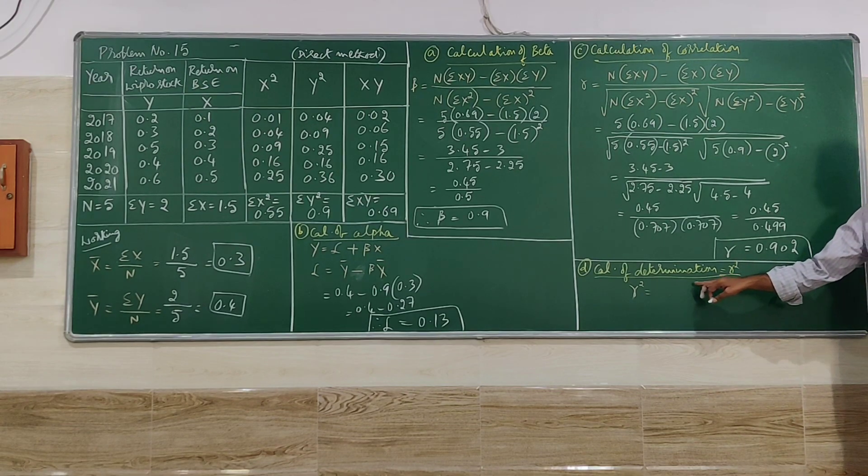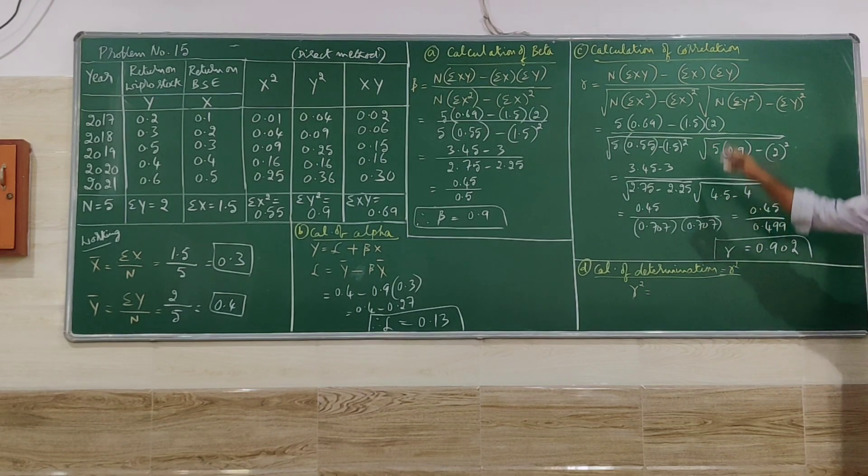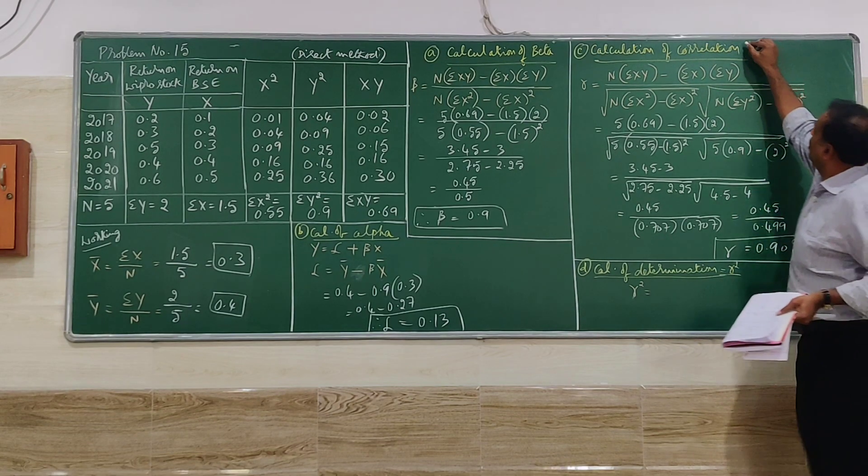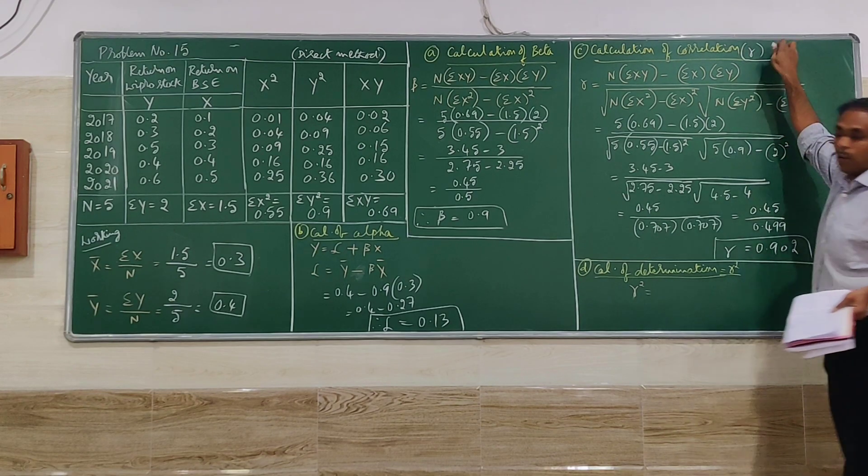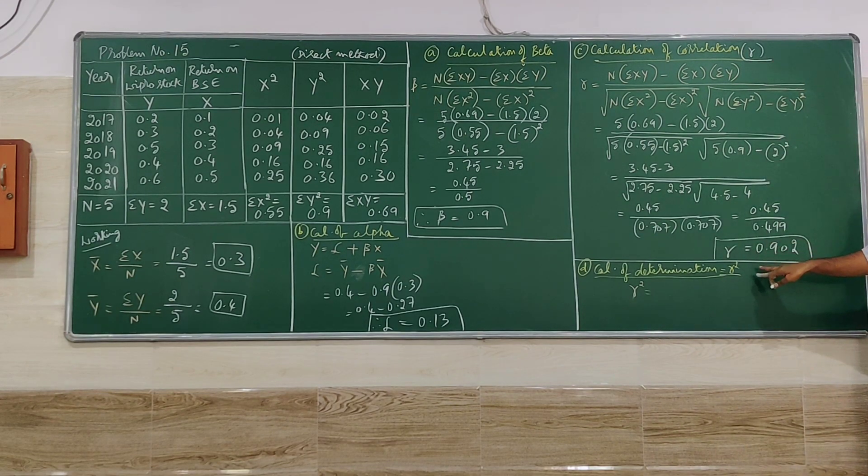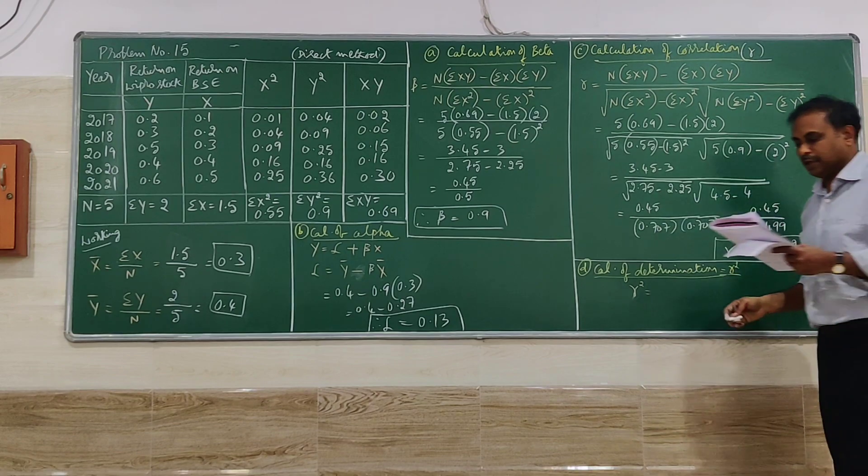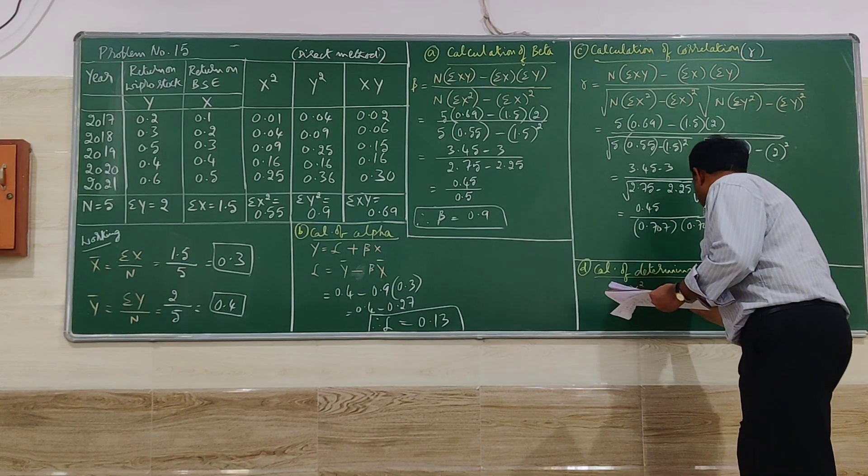Last one is the calculation of determination. Determination is nothing but r square. R is nothing but correlation. So r square is the value of determination, coefficient of determination. So let me substitute the value.